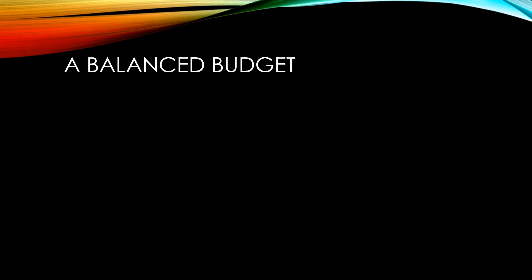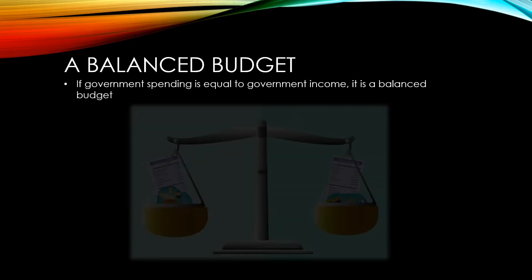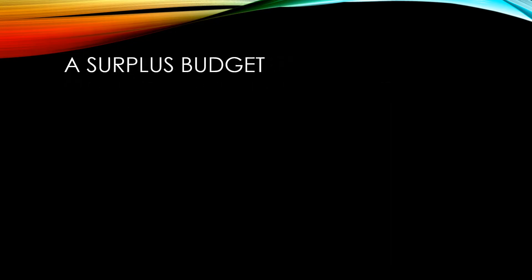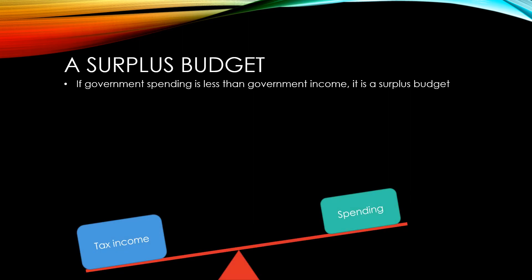When the government's planned spending is exactly equal to the income they expect to receive, we have what's called a balanced budget. If planned government spending is lower than the income that we're expecting to receive, then we have what's known as a surplus budget.